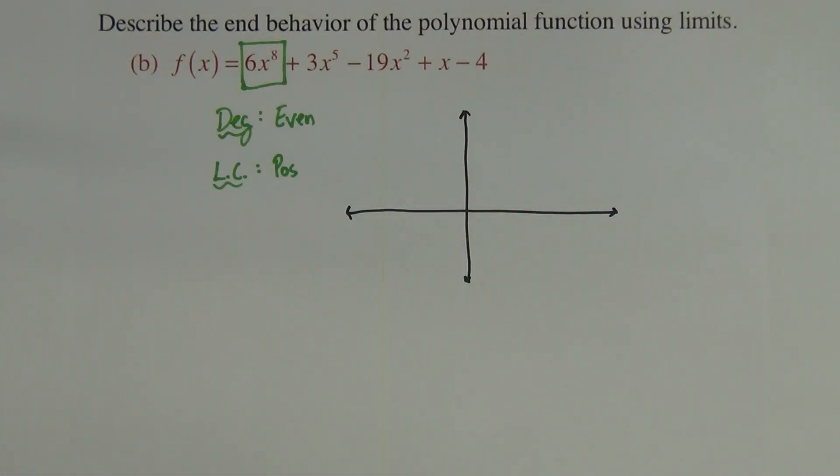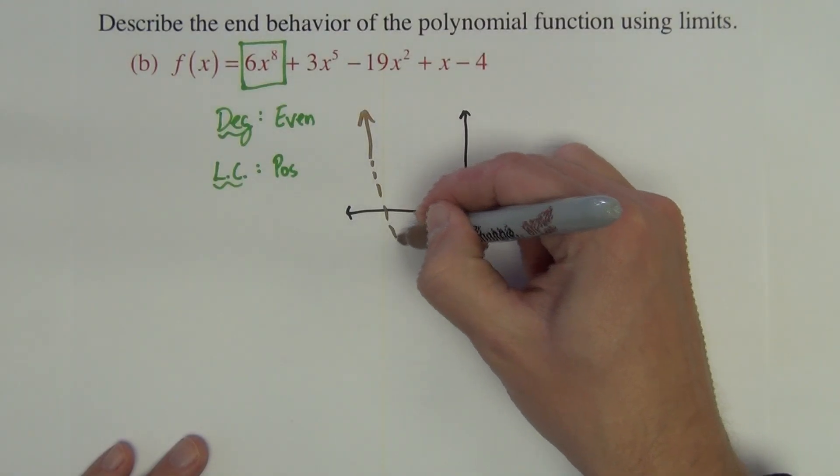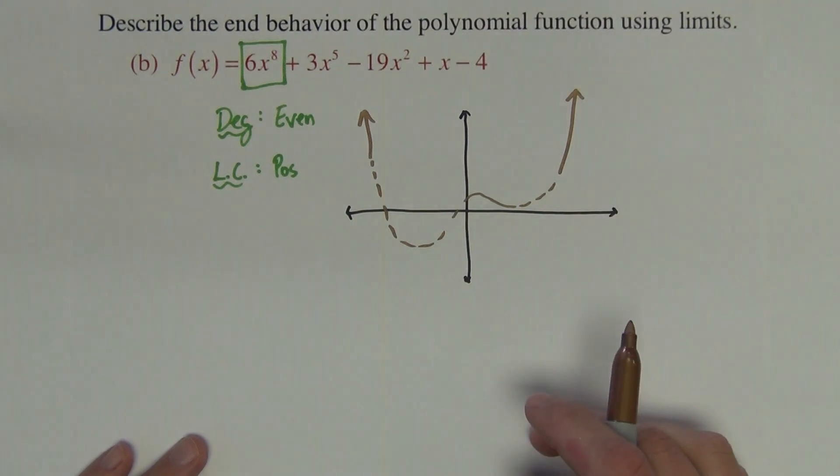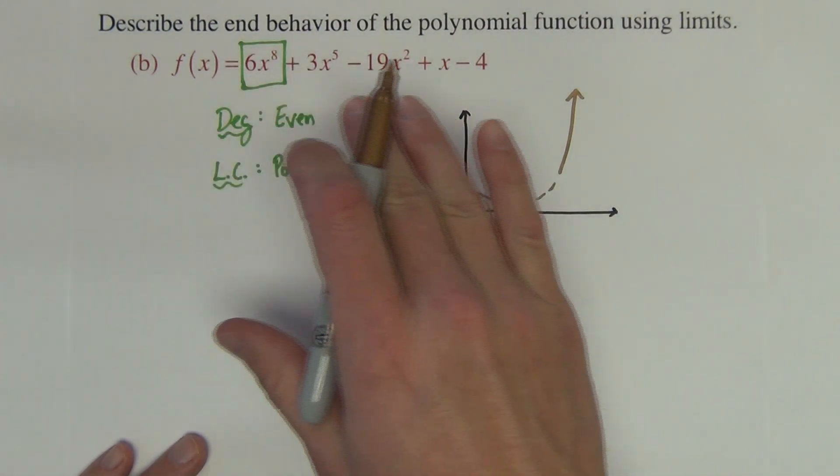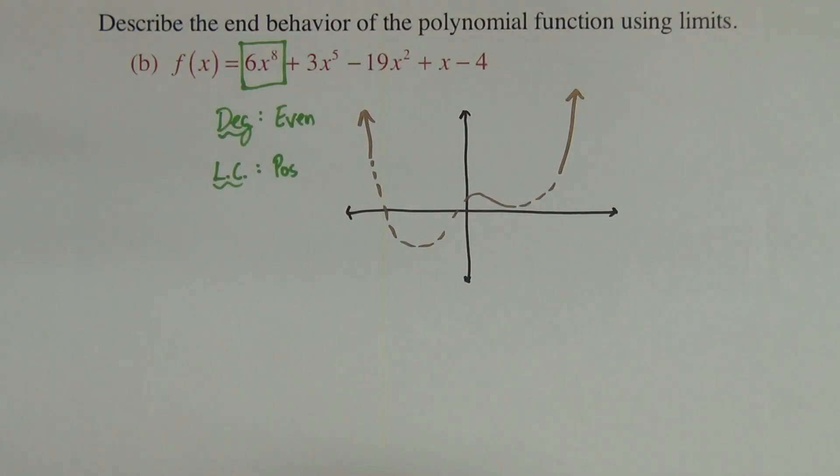And their end behavior is this. It's going to go up on the left, can do all sorts of stuff here, and it's going to go up on the right. Of course, that's not this particular function, but the end behavior is. It's going to go up on the left, up on the right.